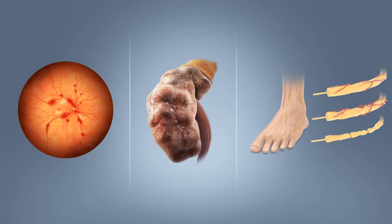Insulin is the principal hormone that regulates the uptake of glucose from the blood into most cells of the body, especially liver, adipose tissue and muscle, except smooth muscle, in which insulin acts via the IGF-1. Therefore, deficiency of insulin or the insensitivity of its receptors plays a central role in all forms of diabetes mellitus. The body obtains glucose from three main sources: the intestinal absorption of food, the breakdown of glycogen (glycogenolysis), the storage form of glucose found in the liver, and gluconeogenesis, the generation of glucose from non-carbohydrate substrates in the body. Insulin plays a critical role in balancing glucose levels in the body.